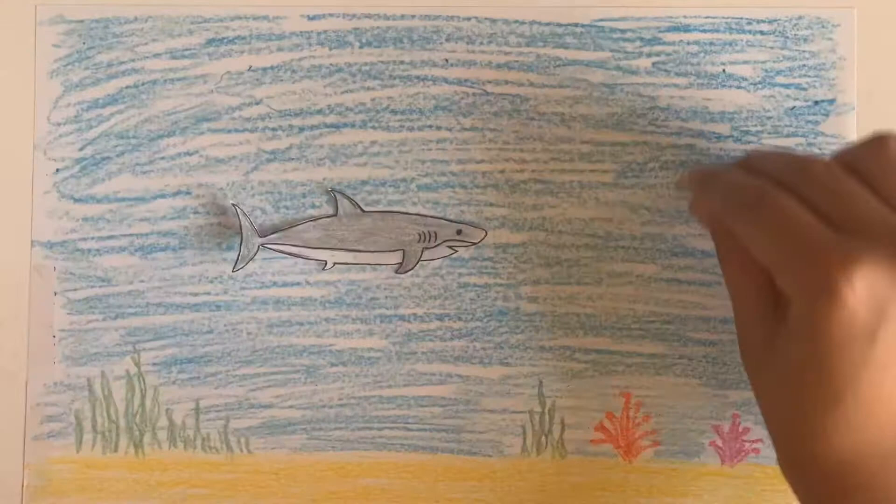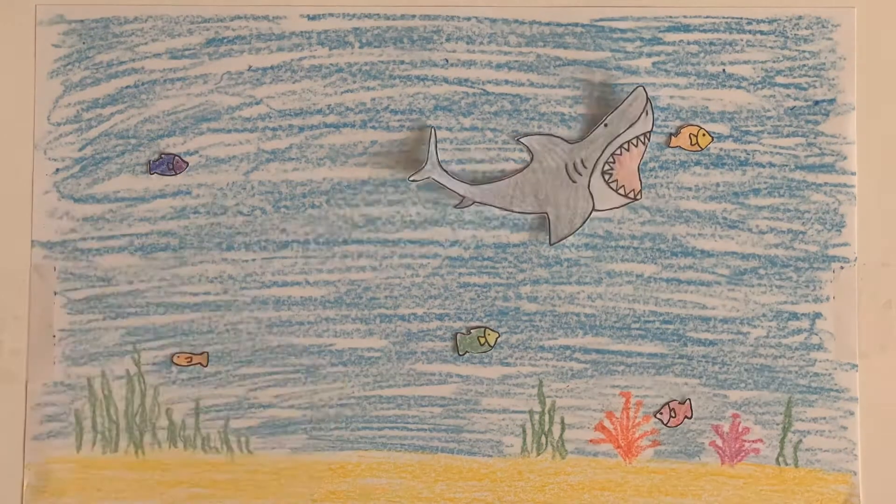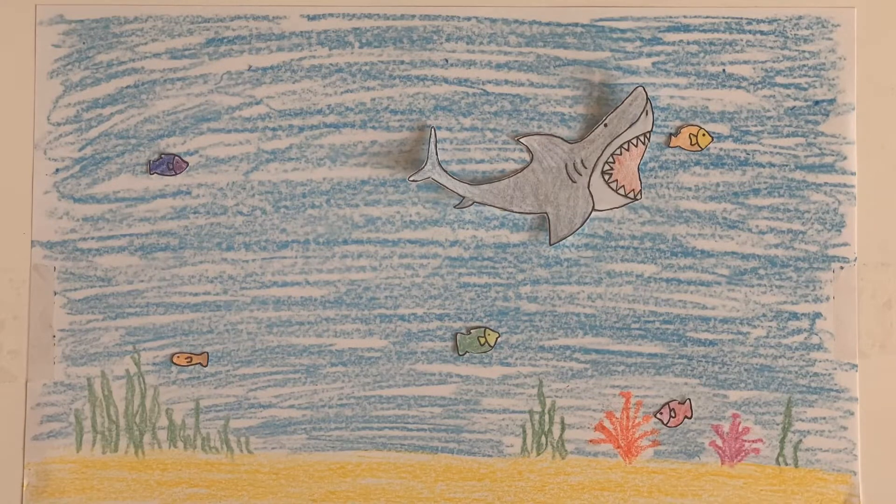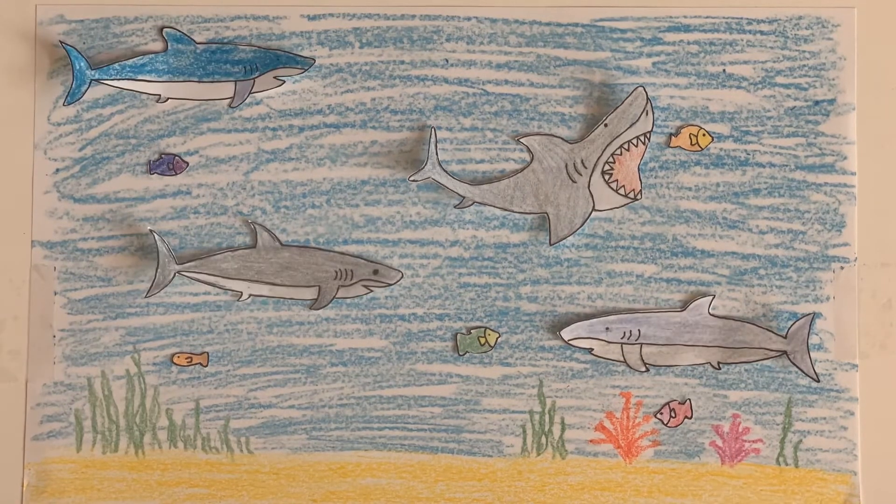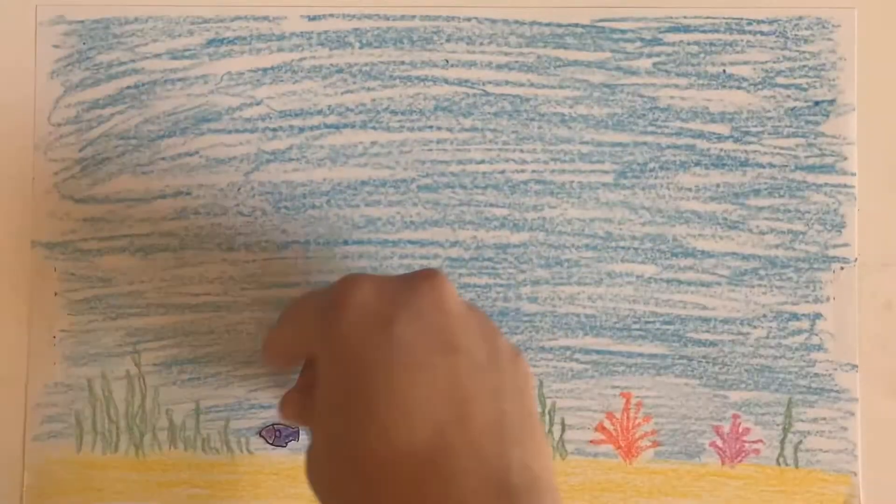Because sharks are keystone species, as the number of large sharks decline, the oceans will suffer unpredictable and devastating consequences. The reduction or extinction of sharks will ultimately cause a trophic cascade within our oceans.